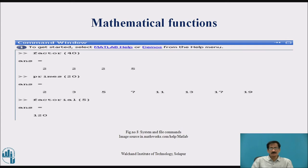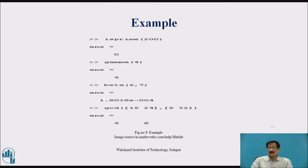Mathematical functions: factor(40) will result in 2, 2, 2, 5. primes(20) will give the prime numbers 2, 3, 5, 7, 11, 13, 17, and 19. factorial(5) will result in 120. isprime(200) gives answer 0. Then gamma and beta functions are also available.